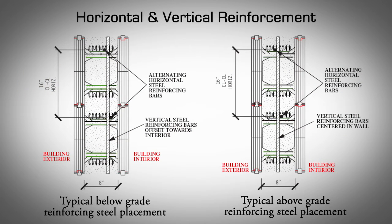Horizontal Reinforcement. ANVIC polypropylene webs are specifically designed to accommodate and secure the horizontal reinforcing steel in place without the need to tie them. Typically, the first course of horizontal reinforcement is placed in the notches closer to the EPS panel. The second course of horizontal reinforcement is staggered so that it is placed in the notch towards the center of the concrete wall.